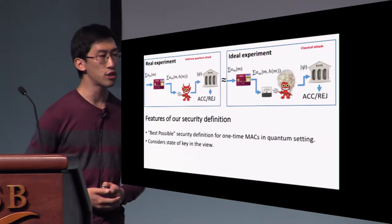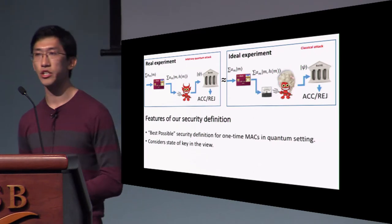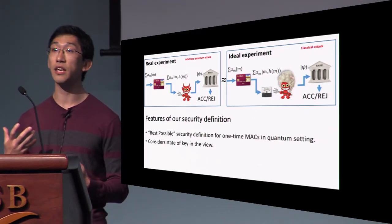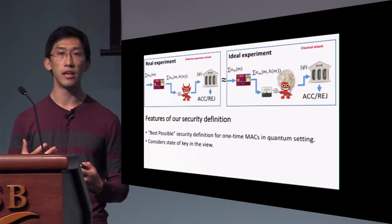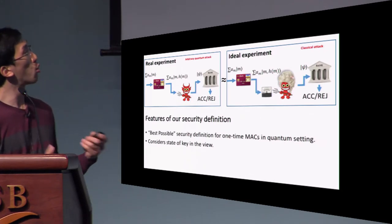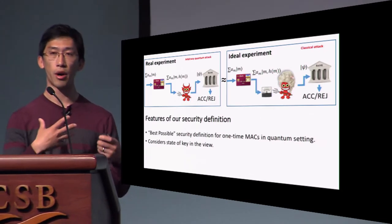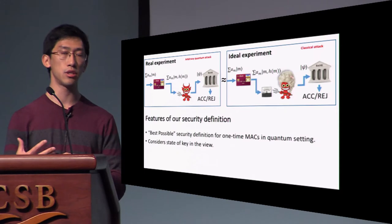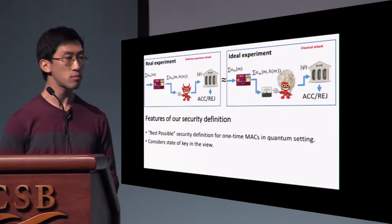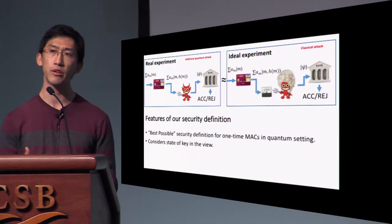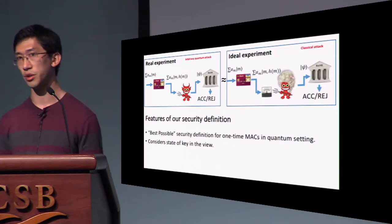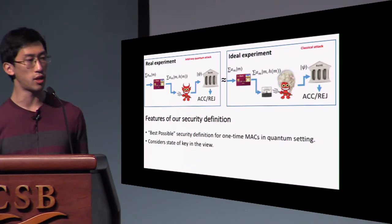Another feature of our security definition is that it considers the state of the key in the view—it considers the correlations between all parties, the messages, and the adversary with the key. Our security definition holds with high probability over the choice of key.